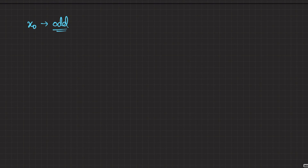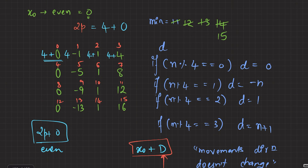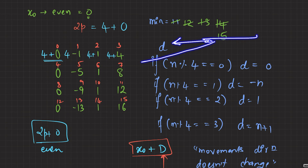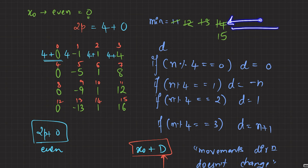Now let's consider the case where x₀ is odd. For those with good observation skills: when the parity of x₀ changes, the magnitude of the jumps stays the same — 1, 2, 3, and so on — only the direction is reversed. So if x₀ is even, the moves go left, right, left, right... but if x₀ is odd, they go right, left, right, left...